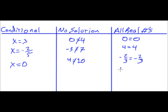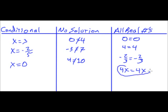For all real numbers, you might actually end up with something like 4x equals 4x. When you have something like that, the reason it's all real numbers is because if you substitute a number for x on both sides of the equation, it's always going to work. So no matter what x value you have, both sides are always the same. Whereas in no solution, no number will ever work.